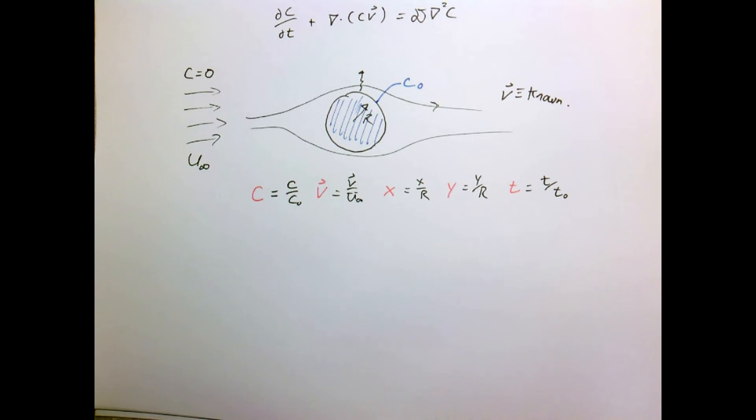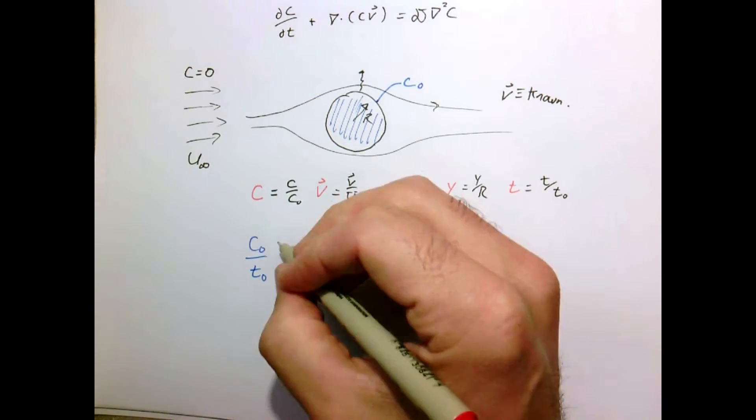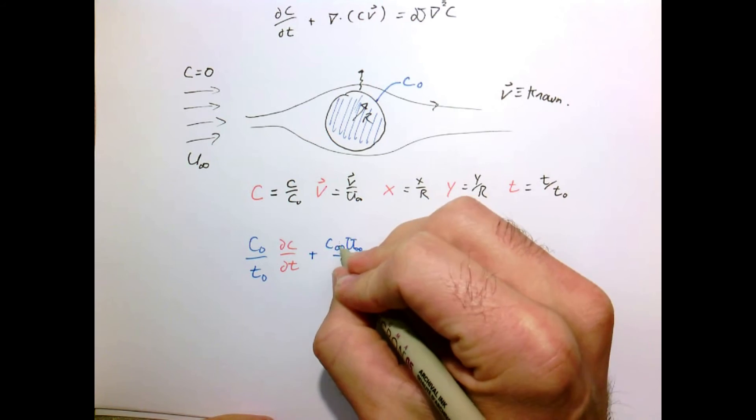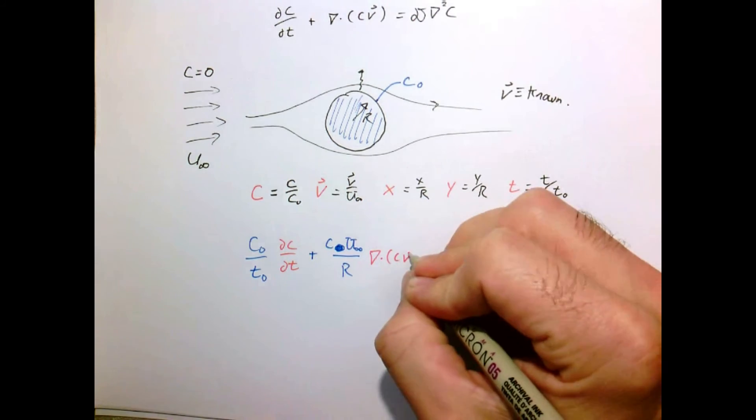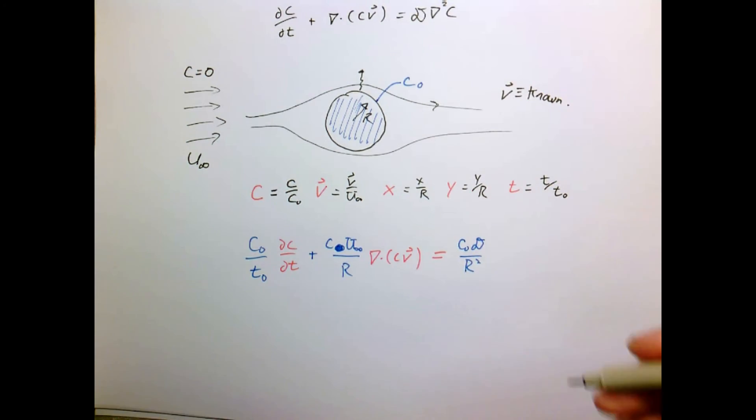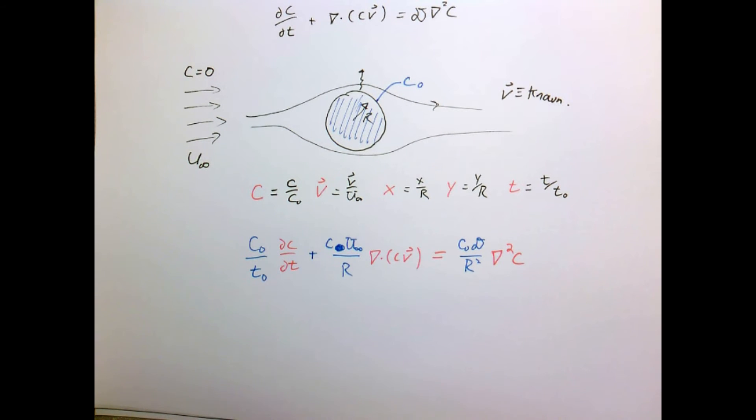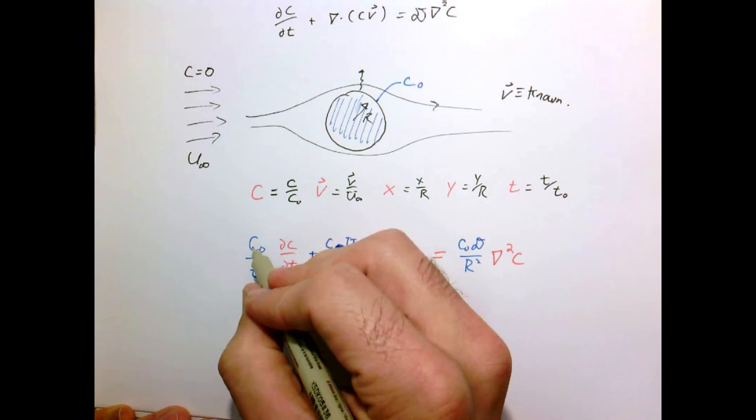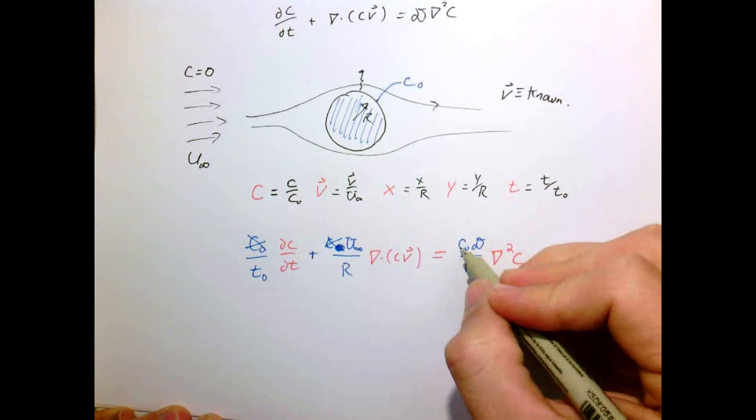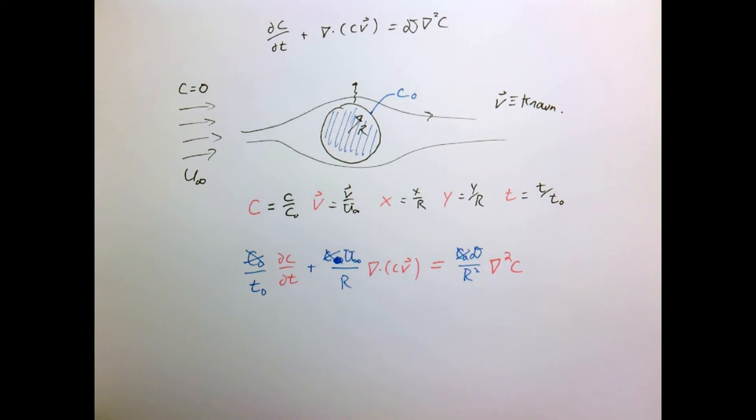I'll write our constant parameters in blue. Our red variables are dimensionless and our blue numbers are just constants. We notice first that we have C naught in every term, so I can just get rid of that. The actual level of the concentration doesn't matter, only the relative amount does. I'm going to pick arbitrarily this term here.